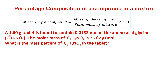Let's apply this formula to an example. A 1.60-gram tablet is found to contain 0.0133 moles of the amino acid glycine. The formula of glycine is C₂H₅NO₂ and its molar mass is 75.07 g/mol. We need to find the mass percent of glycine in the tablet. To find mass percent, we first need the mass of glycine. We are given moles and molar mass, so we will apply the mole concept to find the mass.